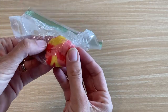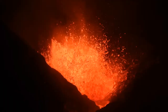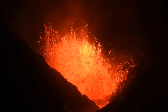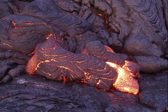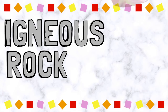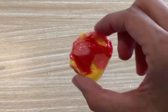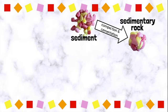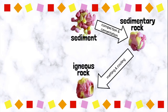That magma can erupt out of a volcano, becoming lava. The magma or the lava can then cool and harden to form an igneous rock. So, we started with sediment, which became a sedimentary rock, and then was melted and cooled into an igneous rock.